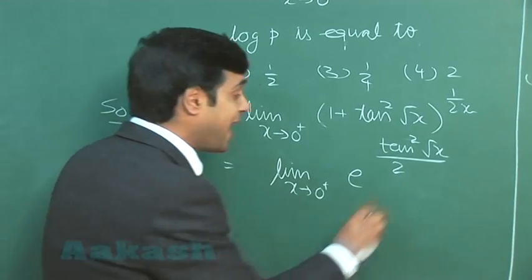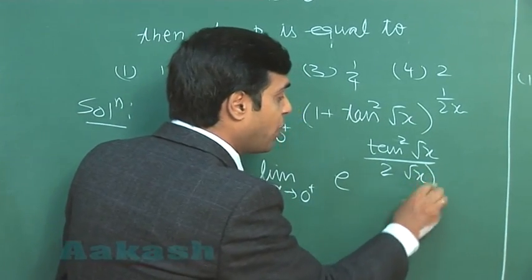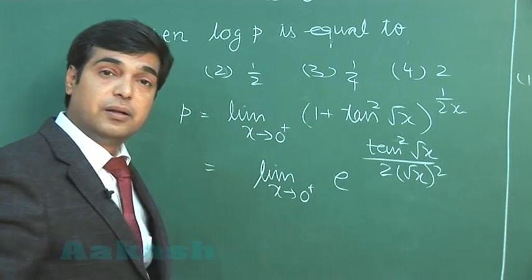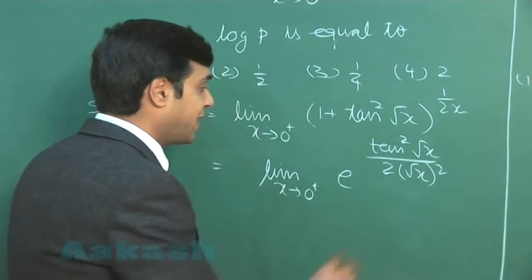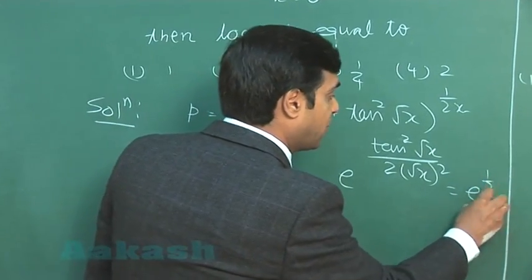We can write further this x as √x whole square, so that we can read it tan√x by √x as 1. So simply we are getting the result as e raised to the power half.